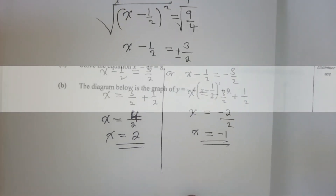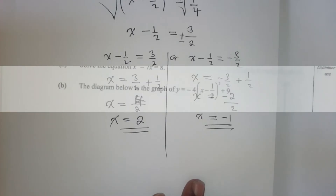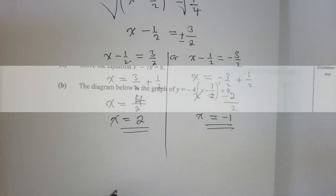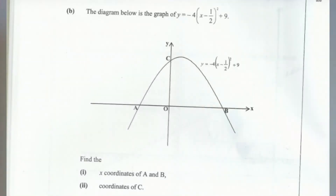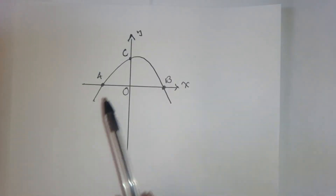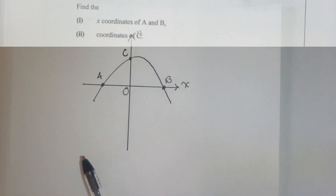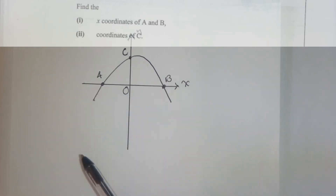Moving to question 22b part two, we need to find the coordinates of point C. C is the y-intercept, so we need to find where the curve cuts the y-axis.